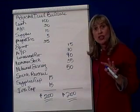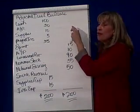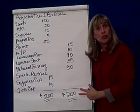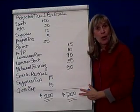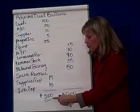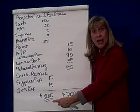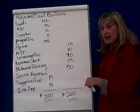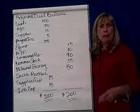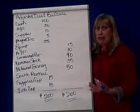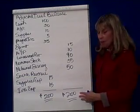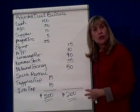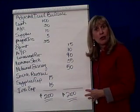So those are the four adjusting entries. Once we've journalized and posted our adjusting entries, we do an adjusted trial balance to prove that our debits equal our credits. These are very small numbers — think of them in millions or billions — but it comes out to 200,000 in debits equal 200,000 in credits.